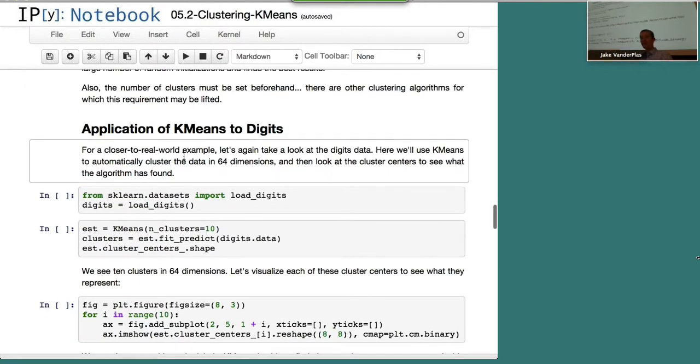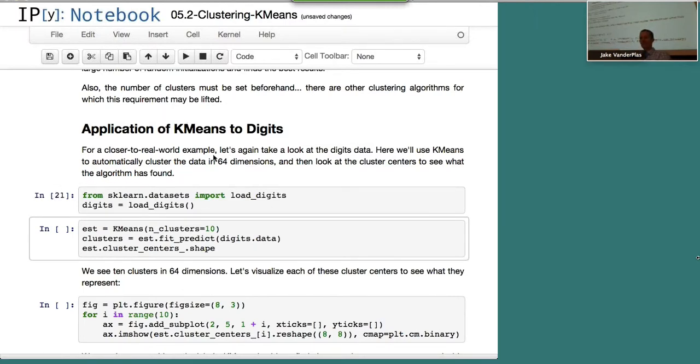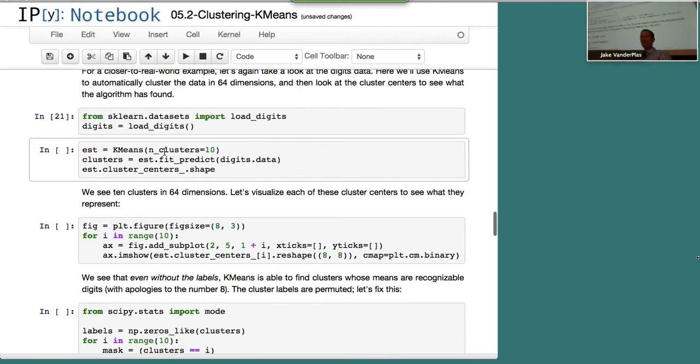But we can use k-means for some interesting things. So let me show you with our digits data that we love to take a look at. Let's see what happens when we apply k-means to digits data. We're going to say that we have 10 clusters. So we're looking at that digits data we've seen before.